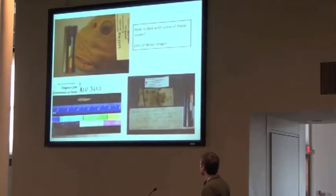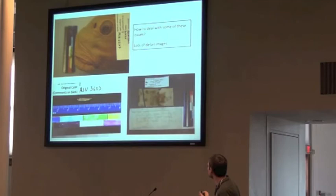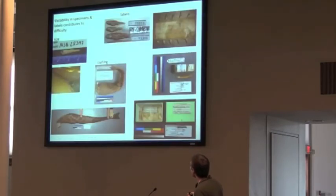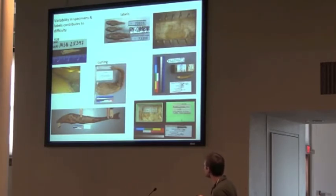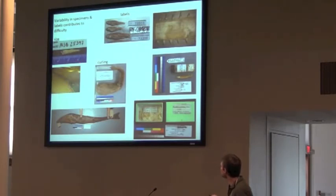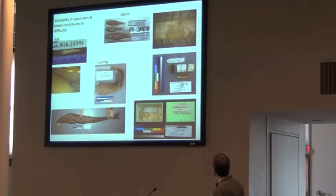How do we deal with some of the species? Basically just by taking lots of detailed images — we'll zoom in on the head, or for a small specimen, zoom in on just the specimen, and same for a label. We're finding a lot of variability in specimens and labels, making our tasks a little bit difficult. Specimens are very small or very large, we have a lot of curling of specimens, and labels are variable — there are metal labels, labels included with specimens, labels wrapped around vials, and boxes.